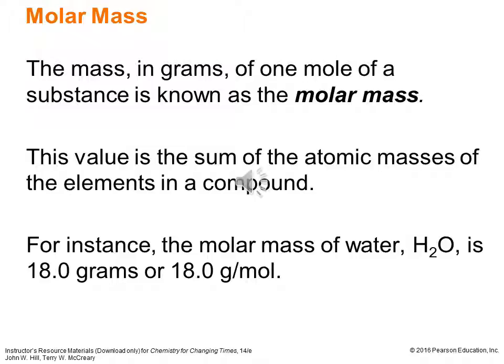Every substance has a molar mass — the mass of one mole of it — and it's the sum of the atomic masses of the elements in the compound. For instance, the molar mass of water, H₂O, is 18.0 grams per mole. That's two times the mass of hydrogen (roughly 1 gram per mole) and one times the mass of oxygen (roughly 16 grams per mole): two times one is two, plus 16 is 18 grams per mole.